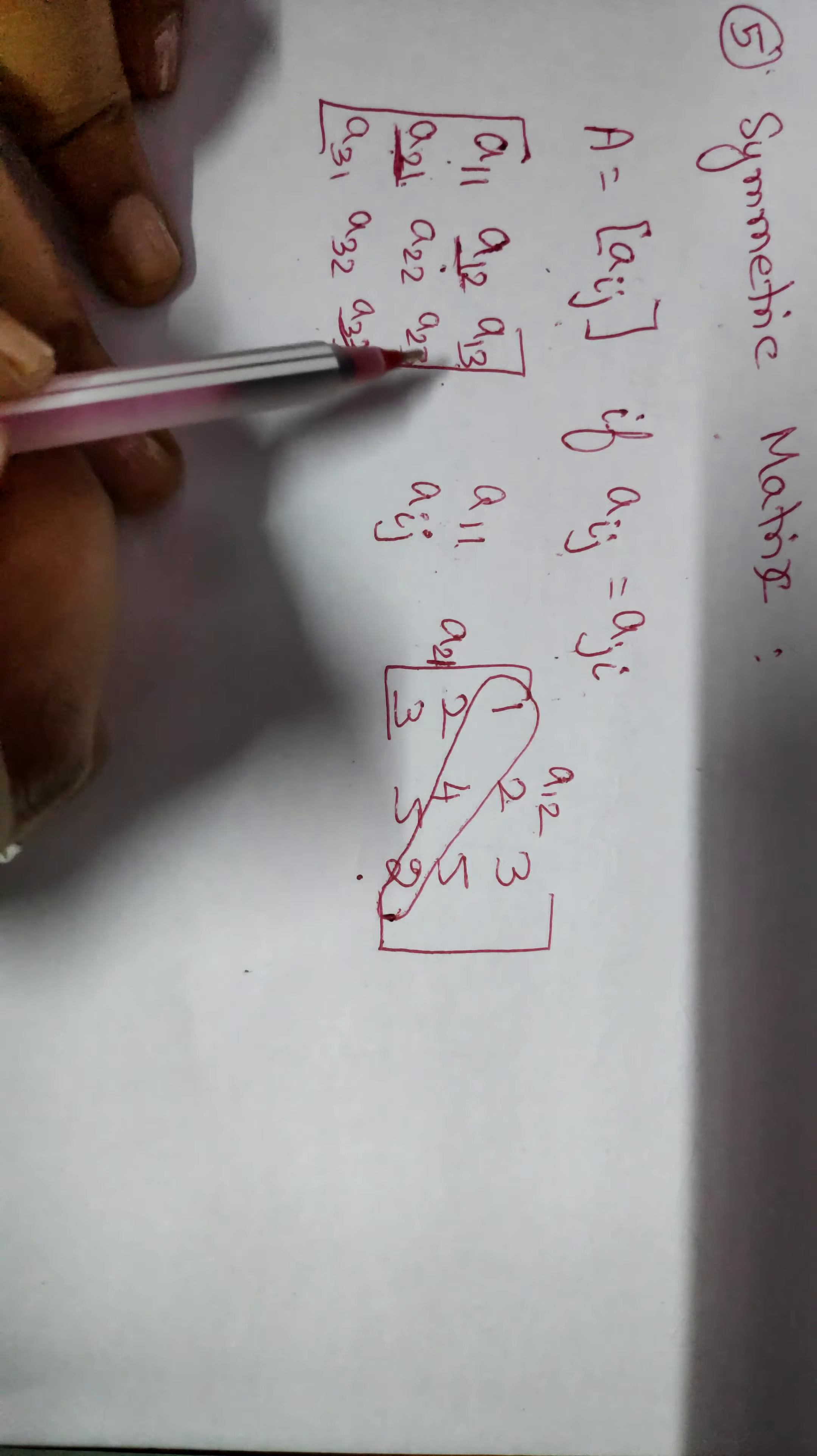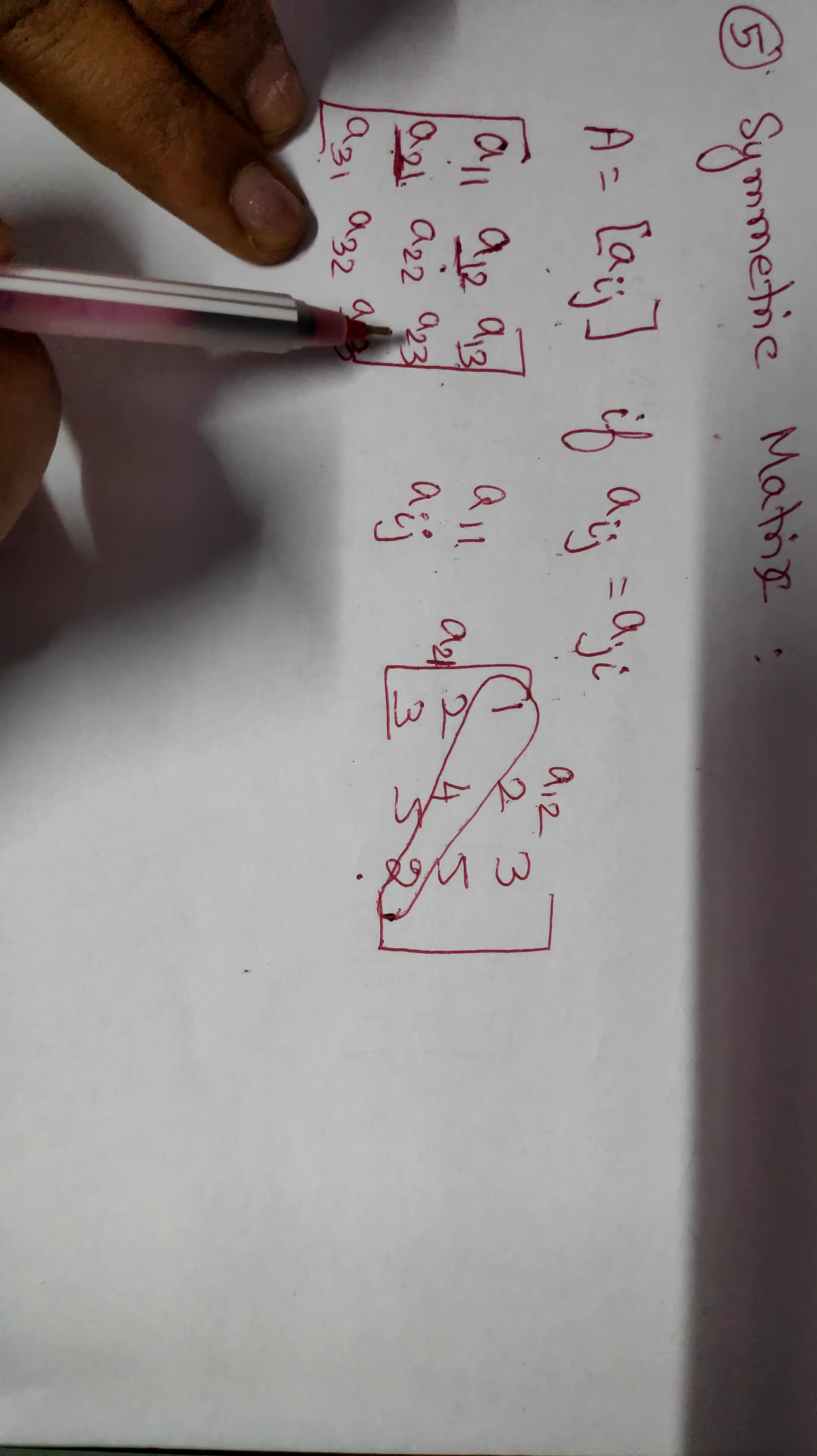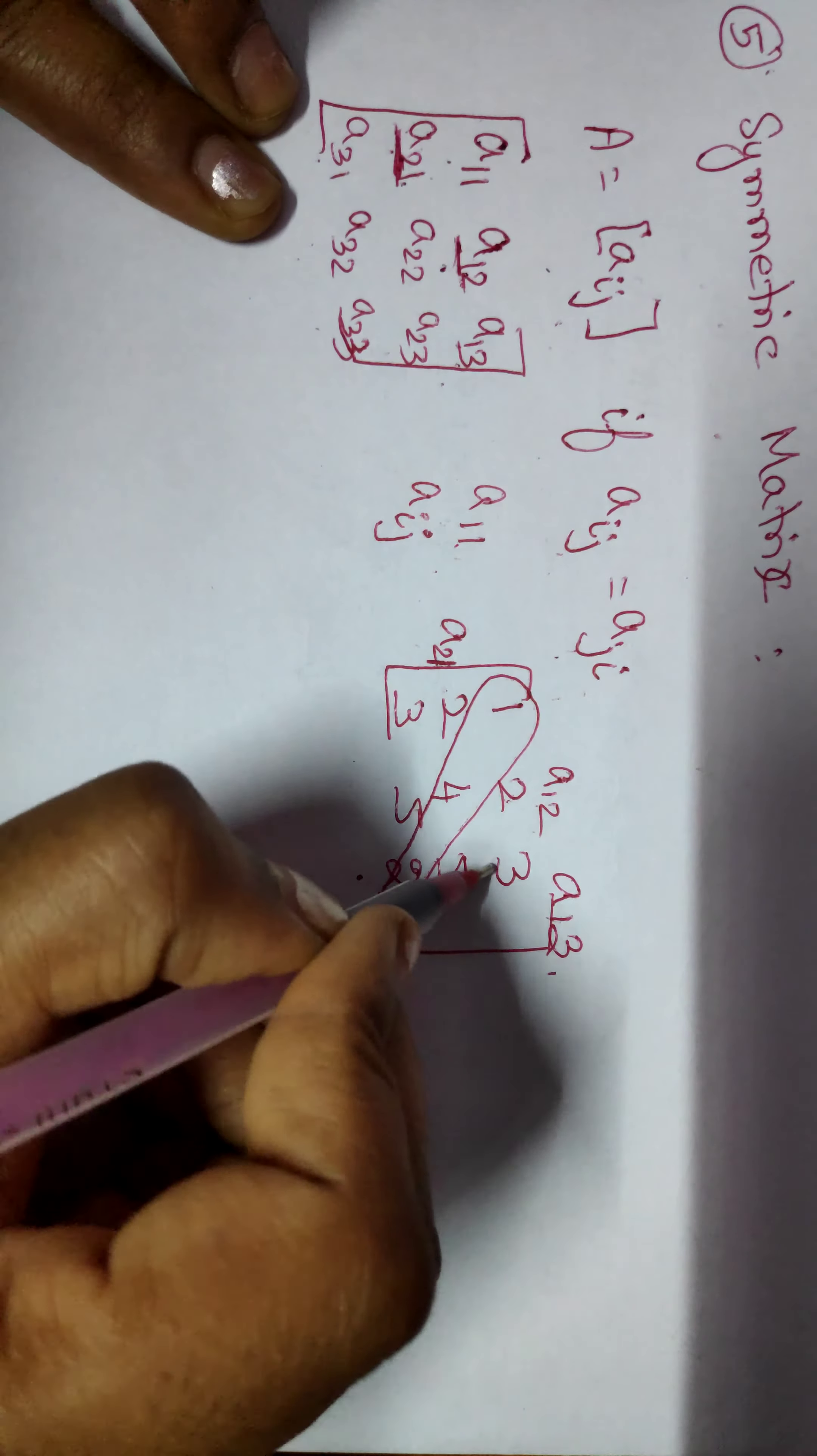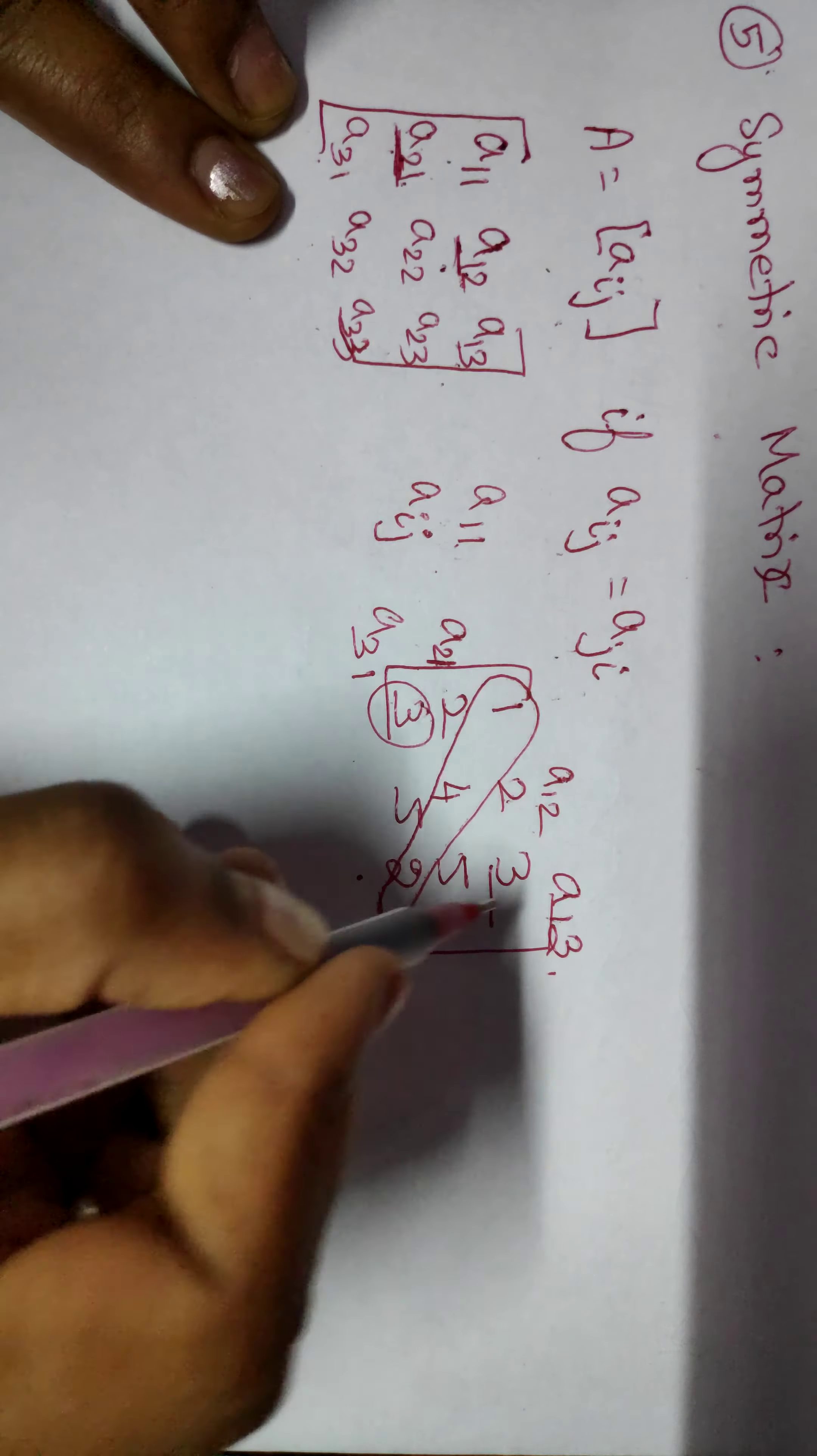Likewise, we have to check for A13, A31, and in between A23 and A32. Let's check. This A13 value is 3, and this is A31 value. This is also 3, so it is equivalent.